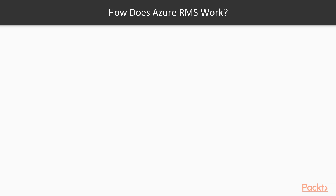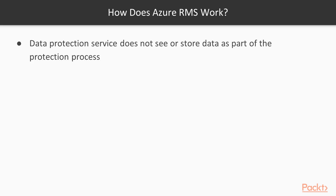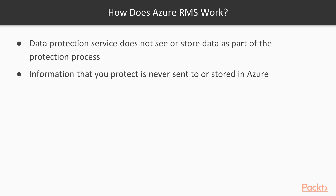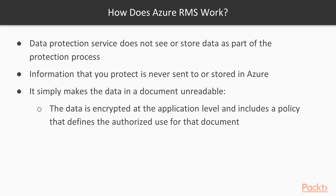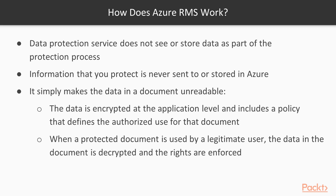How does Azure Rights Management Service work? Data Protection Services, from Azure Information Protection, does not see or store your data as a part of the protection process. Information that you protect is never sent to or stored in Azure, unless you explicitly store it in Azure or use another cloud service that stores it in Azure. Azure Rights Management Service simply makes the data in a document unreadable to anyone other than the authorized users and services. The data is encrypted at the application level and includes a policy that defines authorized use for the document. When a protected document is used by a legitimate user or is processed by an authorized service, the data in the document is decrypted and the rights defined in the policy are enforced.